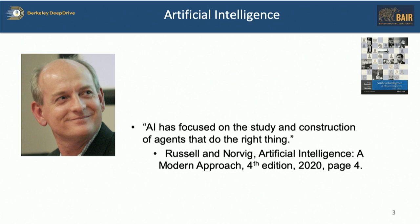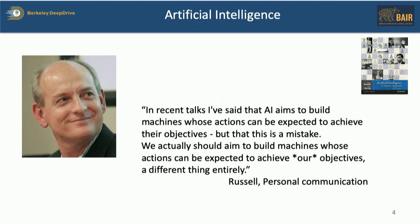I didn't want to bother Stuart — we're in the same lab — so for a definition of artificial intelligence, I went straight to his book, where he says AI has focused on the study and construction of agents that do the right thing. It's a little vague for me, and he was kind enough to reply. He said, in recent talks I've said that AI aims to build machines whose actions can be expected to achieve their objectives, but that this is a mistake. We actually should aim to build machines whose actions can be expected to achieve our objectives — a different thing entirely.